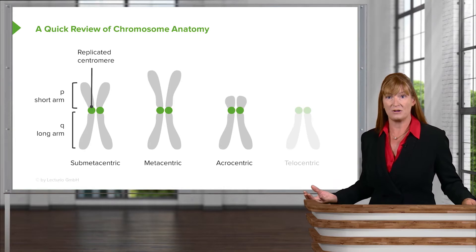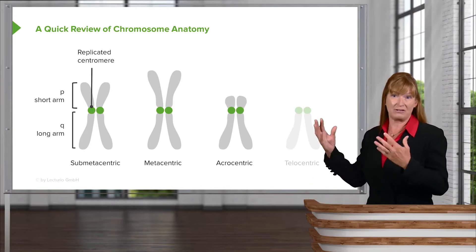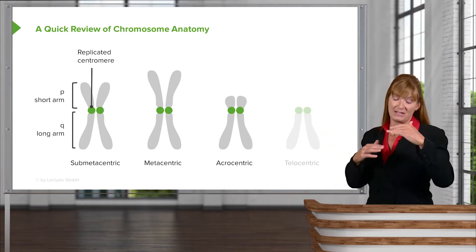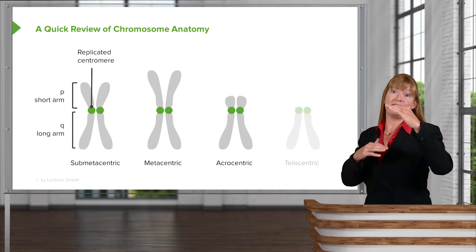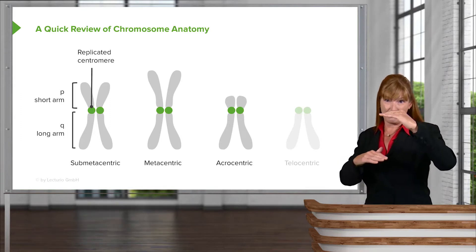So a metacentric chromosome again has the centromeres right slap bang in the middle. And an acrocentric chromosome, I think of acrobat flying through the sky.